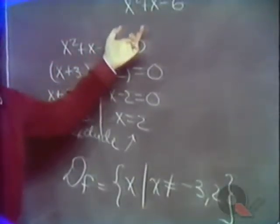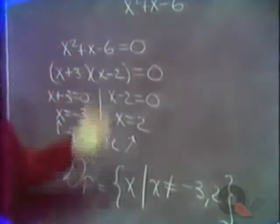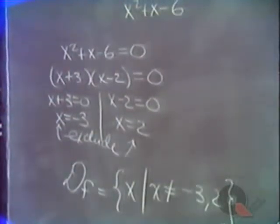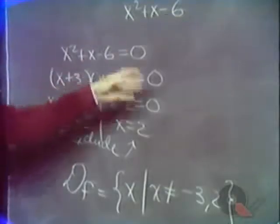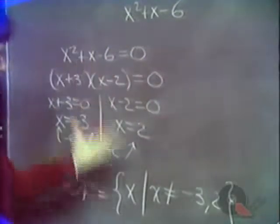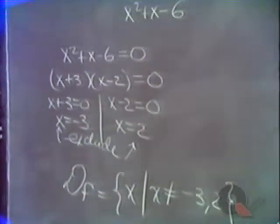There is a denominator, and we'd be in trouble if it were equal to zero. So we take the approach: set the denominator equal to zero, and find those values to be excluded from the domain.